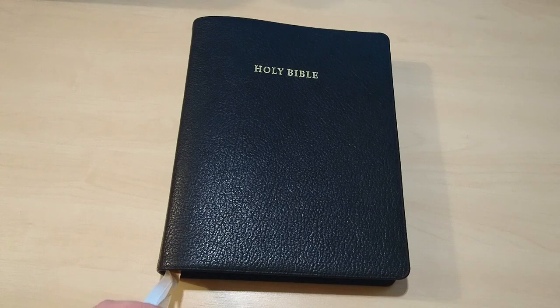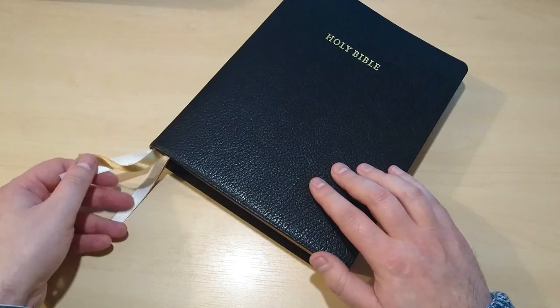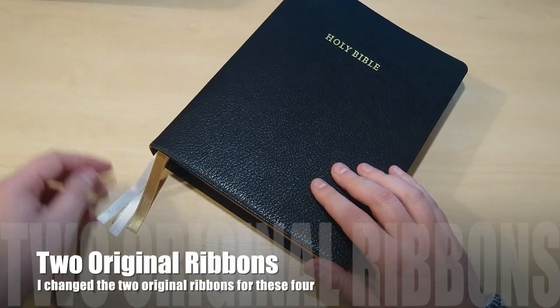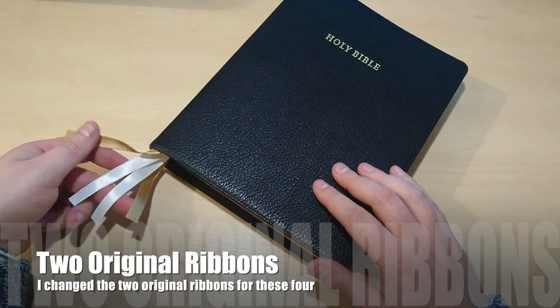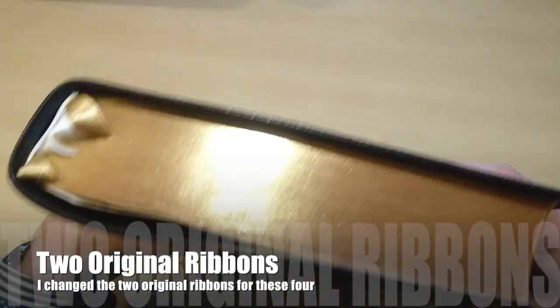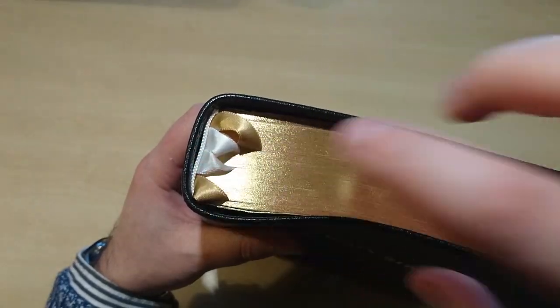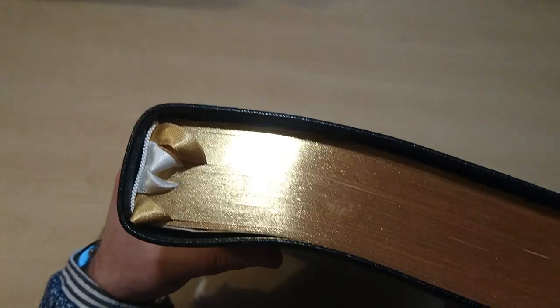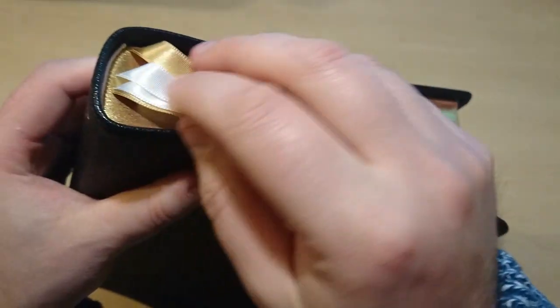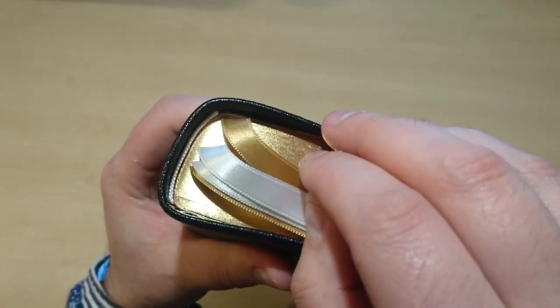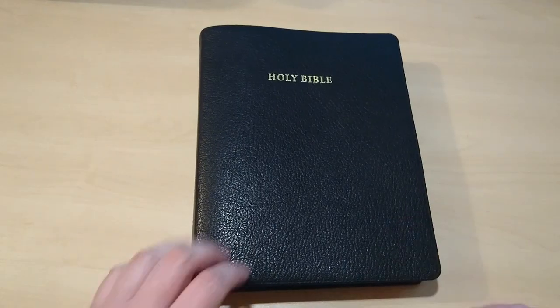This Bible originally came with only two ribbons, as you can see. I added these ribbons in gold and white—I added two more ribbons. And as you can see there, I also replaced the headband for a white band which I think looks much nicer.